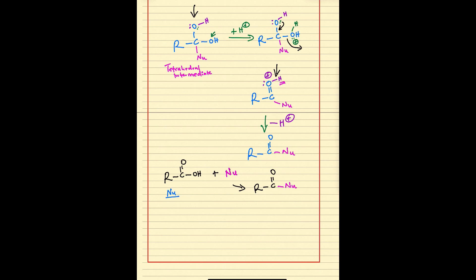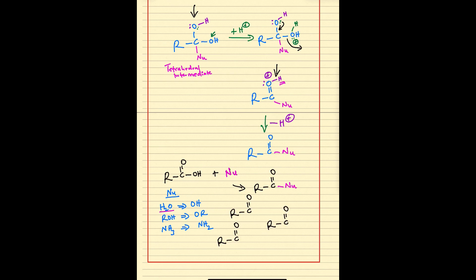Now, types of nucleophile. If you use water, H2O, it loses one proton and you end up adding OH — giving you a carboxylic acid as product. If you start with something like an acid chloride, this reaction forms a carboxylic acid. If you use an alcohol, ROH, you lose a proton and add OR, giving you an ester. If you use ammonia, NH3, or a primary or secondary amine, you lose one hydrogen and add NH2, giving you an amide as the product.